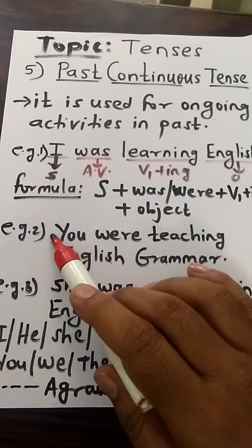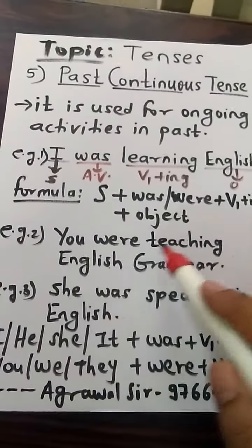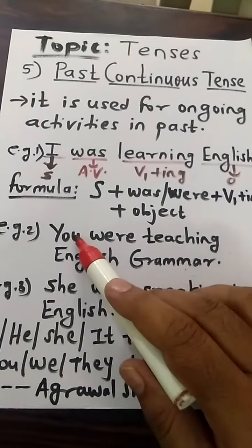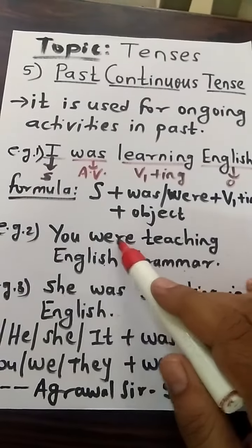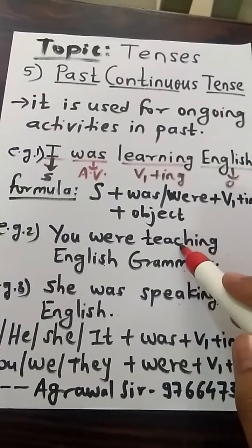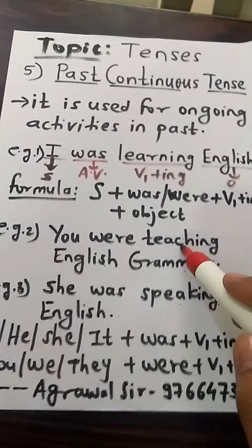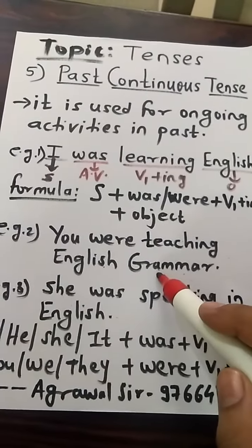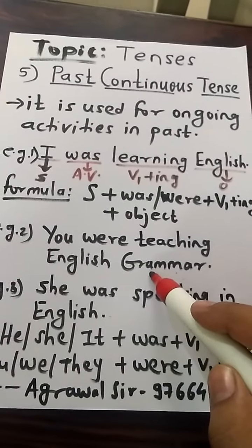Example 2: You were teaching English grammar. 'You' is the subject, 'were' is the auxiliary verb, 'teaching' is the present participle, and 'English grammar' is the object.